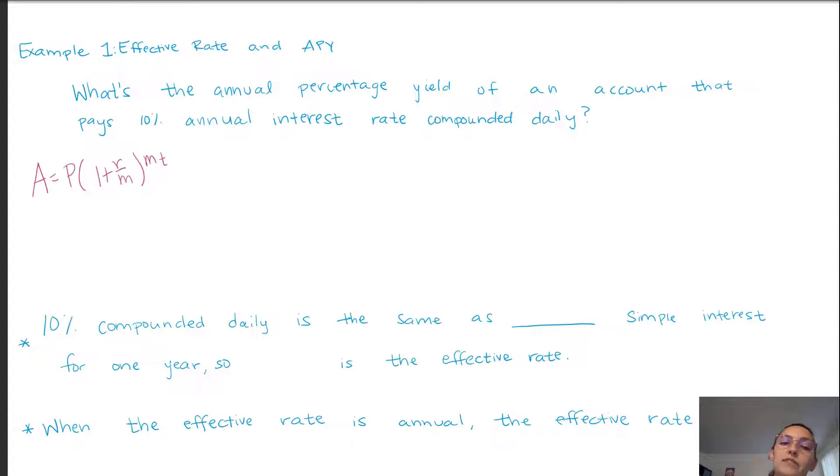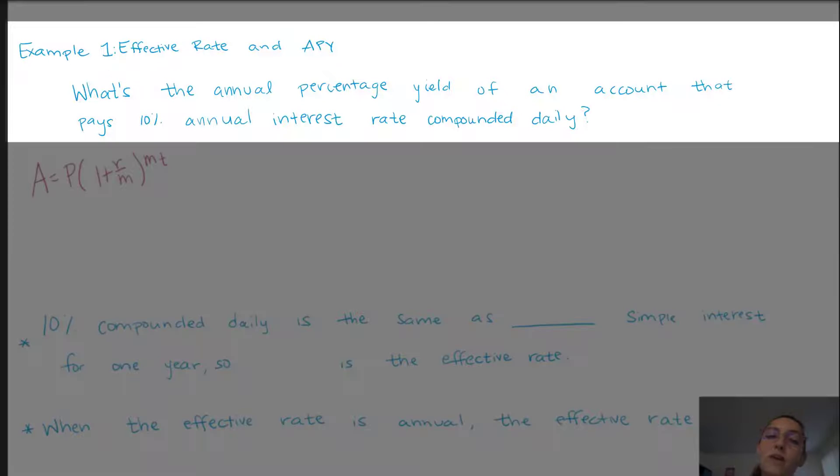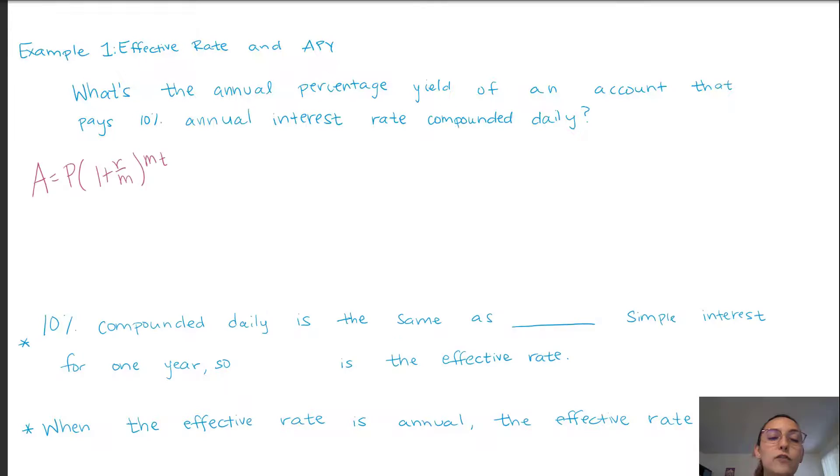Let's explore APY and effective rate with this example. We want to find the annual percent yield of an account that pays 10% annual interest rate compounded daily. From the compound interest method, we have a rule. We can use this rule to determine the effective rate. We're not given a principal amount, but a principal amount is not needed.